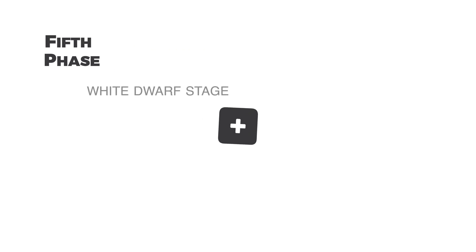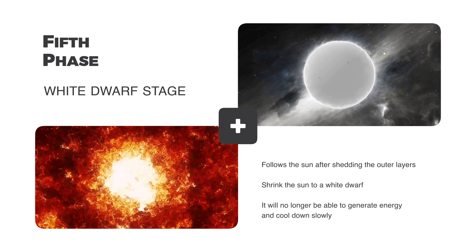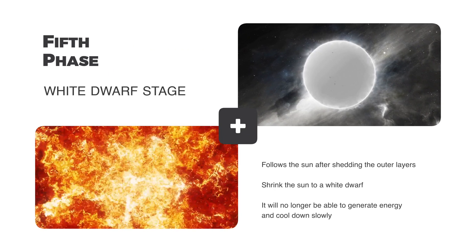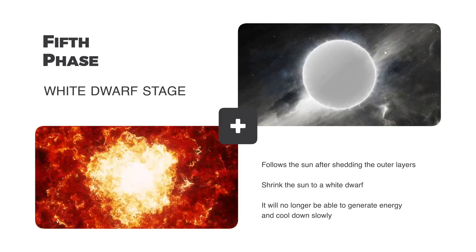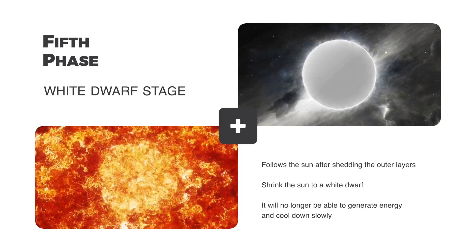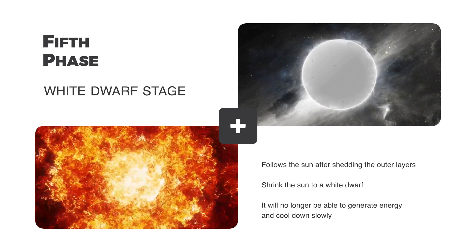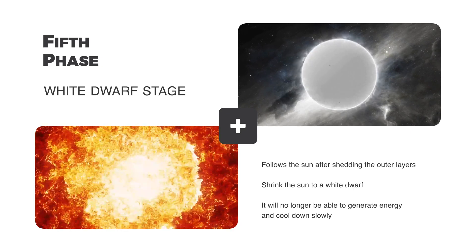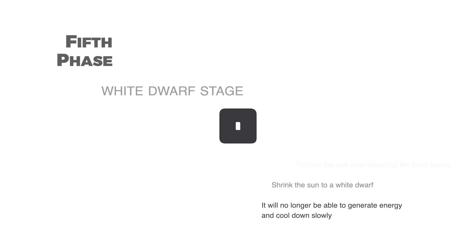The fifth phase will be the white dwarf stage, which will follow the shedding of the Sun's outer layers. Then the Sun will shrink into a white dwarf, a small, hot star made of carbon and oxygen with a high density. It will no longer be able to generate energy and will slowly cool down.